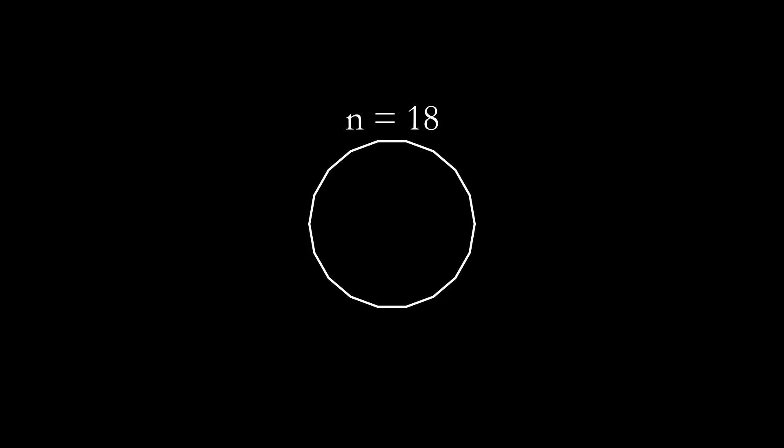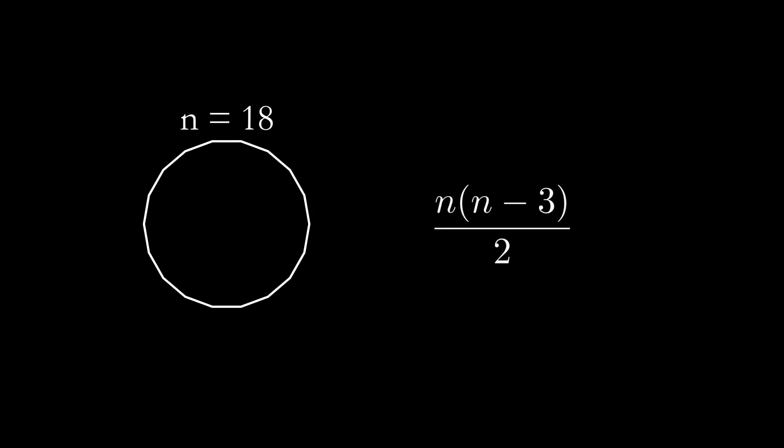Thankfully, as with many things in math, there is a formula, namely n times n minus 3 over 2, where n is the number of sides. While it makes the problem straightforward, using a formula is probably the least intuitive approach for such a visual branch of math. In this video, I'll show a simple, intuitive proof that visually explains what's going on.